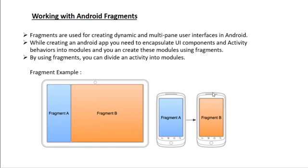This is the actual use of a fragment in an activity. Instead of creating multiple activities, you can divide a single activity into two modules called Fragment A and Fragment B. This means you can easily create dynamic user interfaces using fragments.